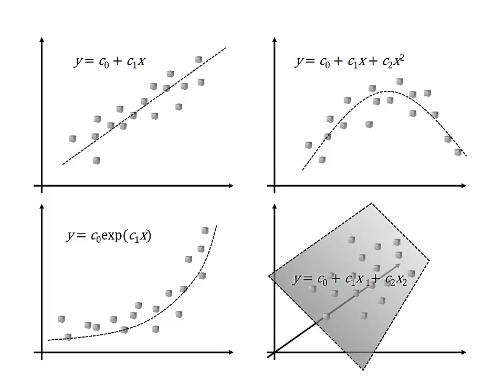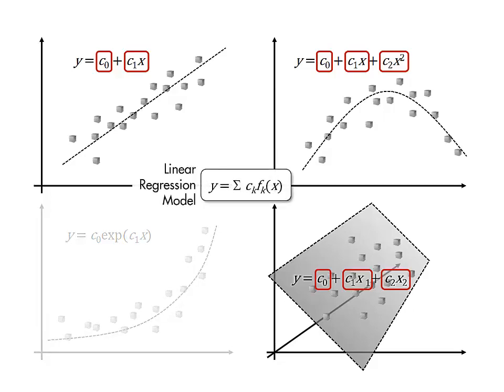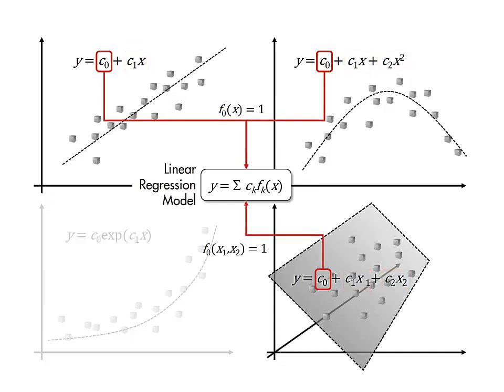There are infinitely many possible parametric regression models you could propose. An important class of models is linear regression models, which includes any model that is a sum of terms, where each term is a function of the predictor variables multiplied by one of the parameters.